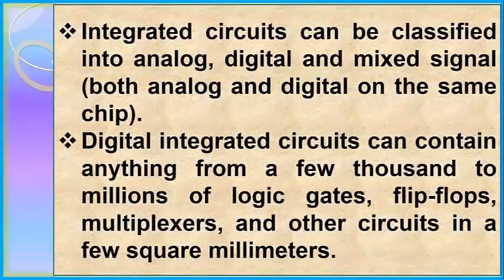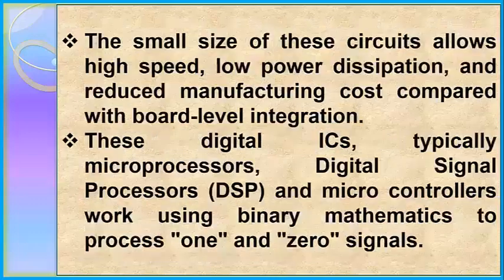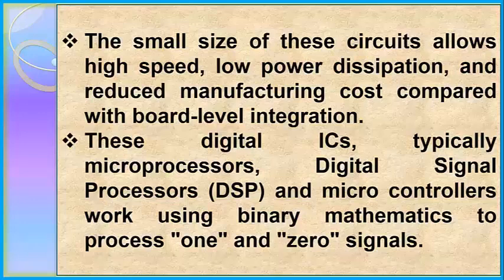Integrated circuits can be classified into analog, digital, and mixed-signal types. Digital integrated circuits can contain anything from a few thousands to millions of logic gates, flip-flops, multiplexers, and other circuits in a few square millimeters. The small size of these circuits allows high speed, low power dissipation, and reduced manufacturing cost compared with board-level integration. Digital ICs — typically microprocessors, digital signal processors, and microcontrollers — work using binary mathematics to process one and zero signals.